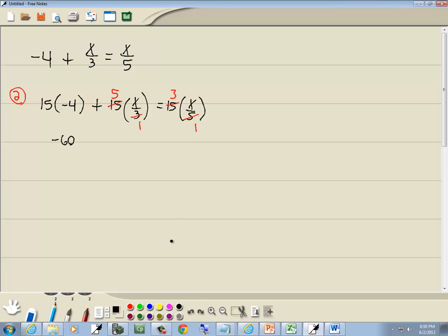You know you picked at least a common multiple if your denominators just disappear and you just have 1's down there. It's kind of a check. 5 times x gives us 5x, and 3 times x gives us 3x.